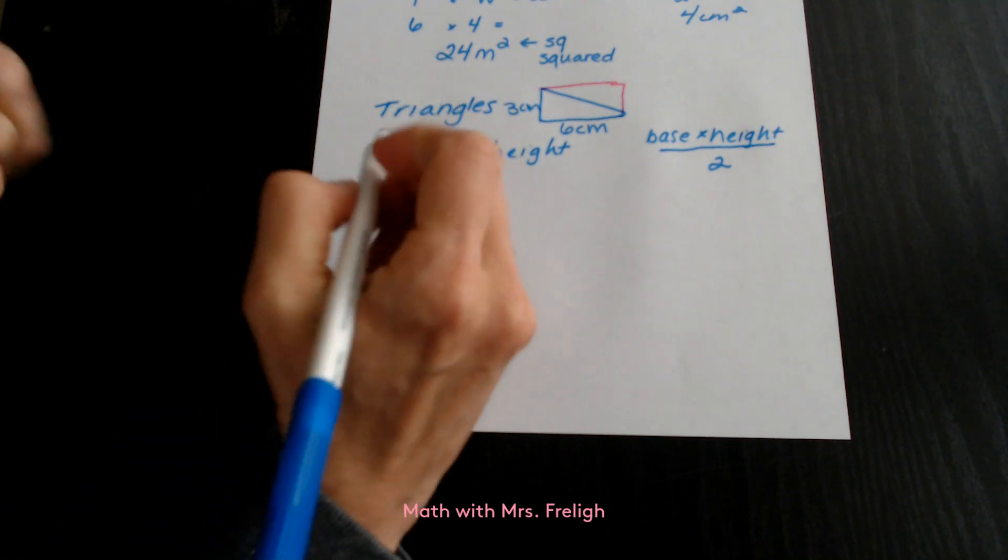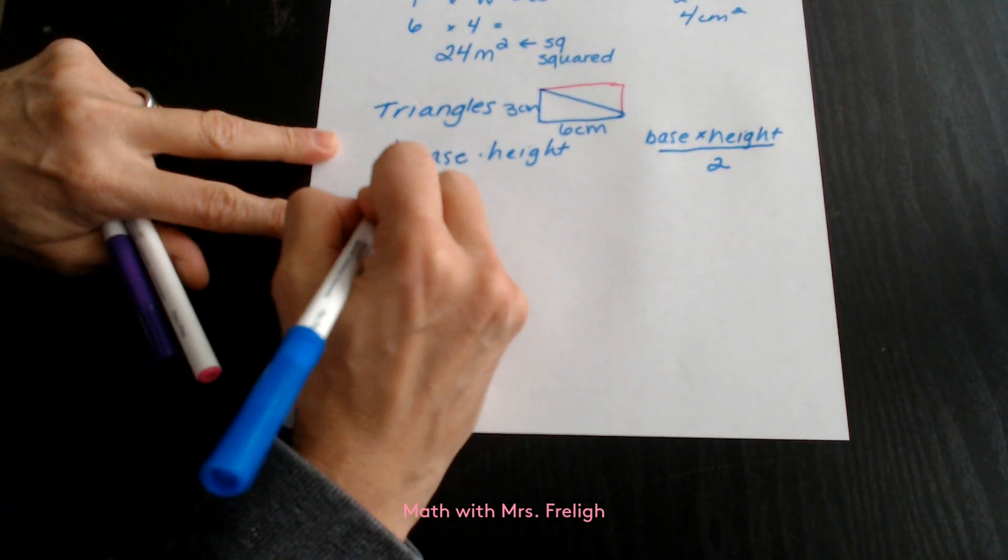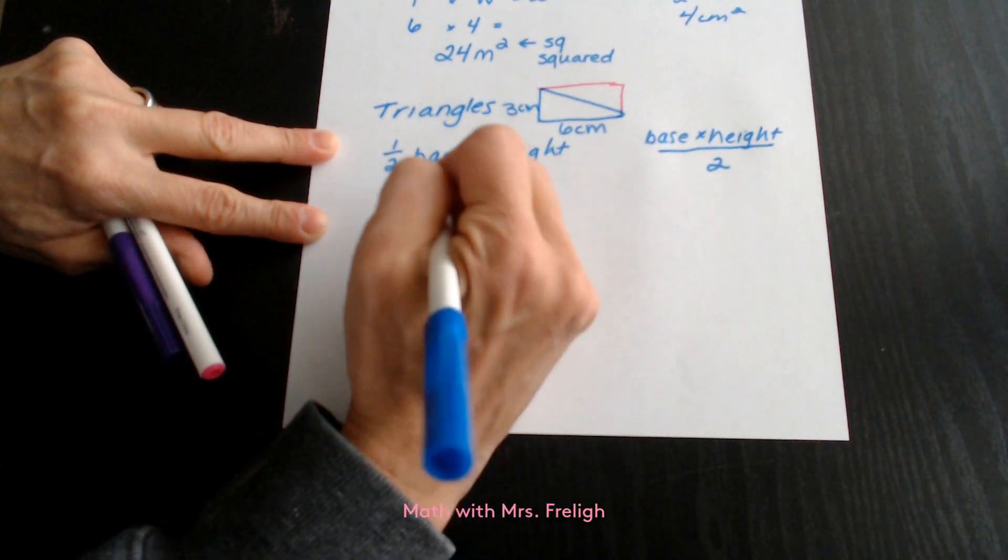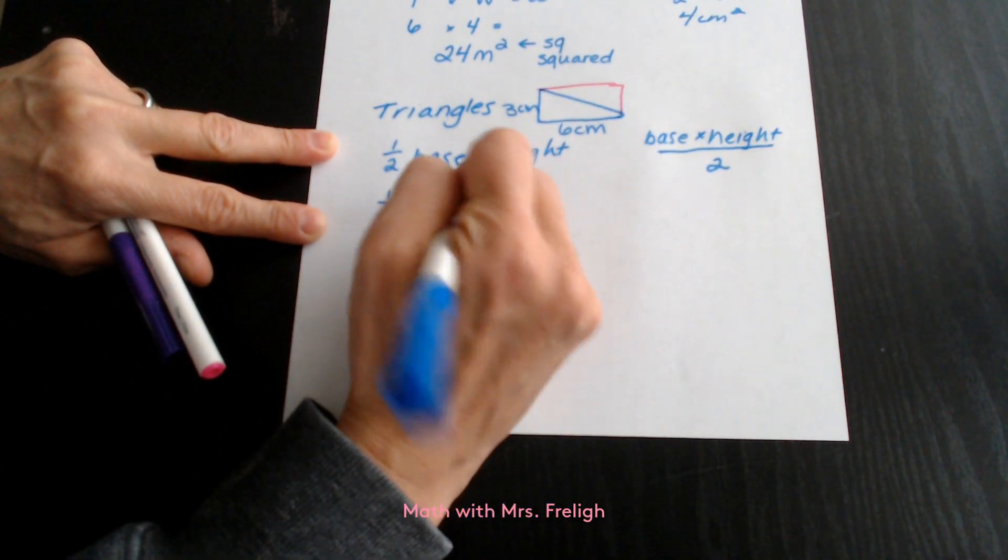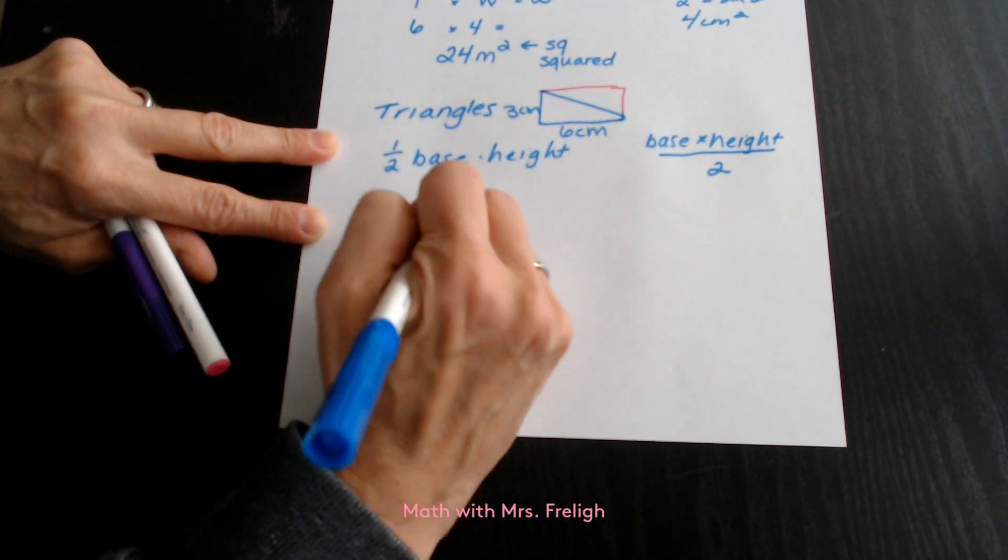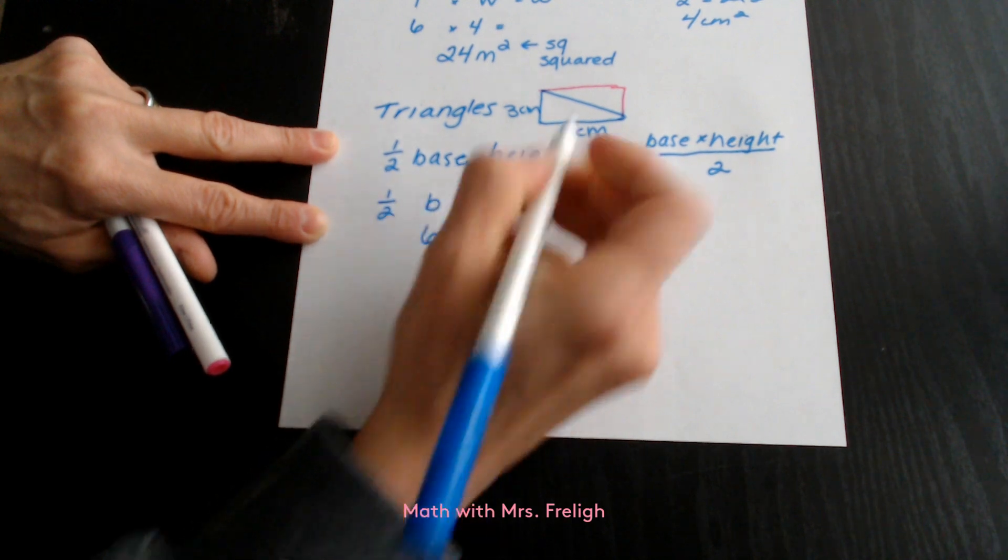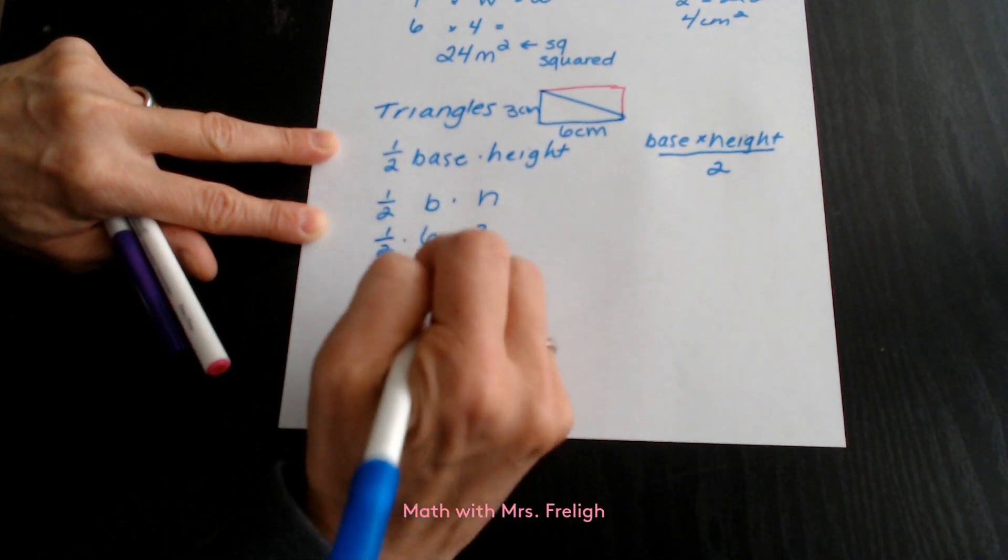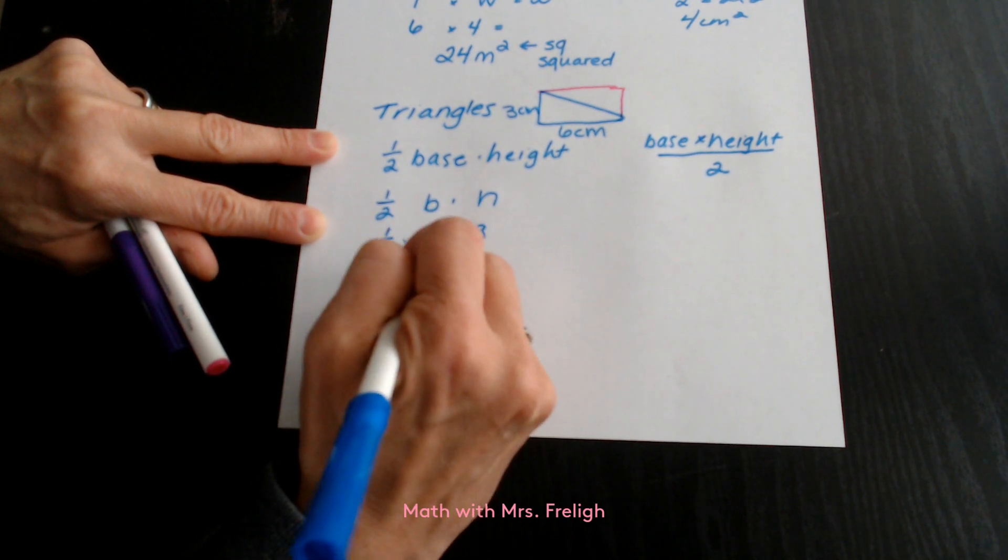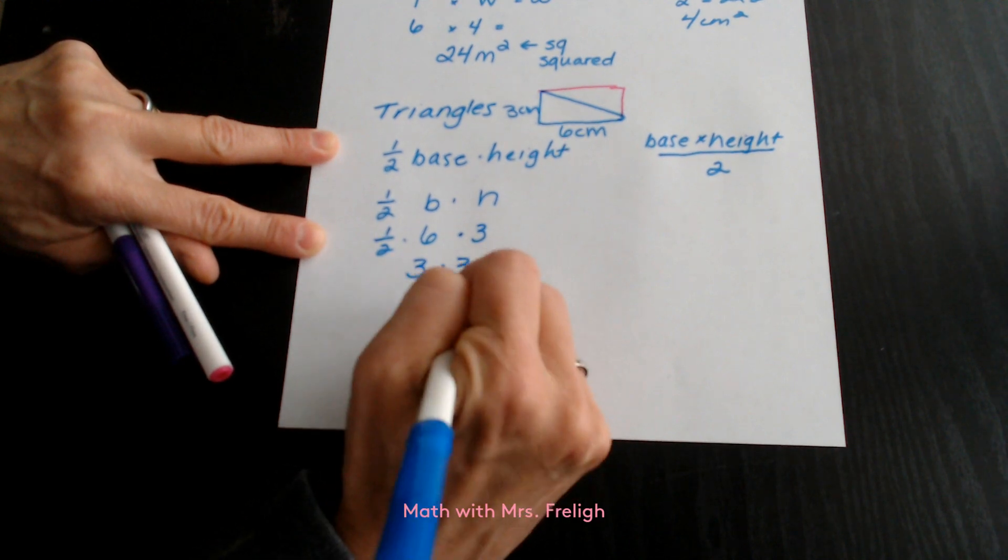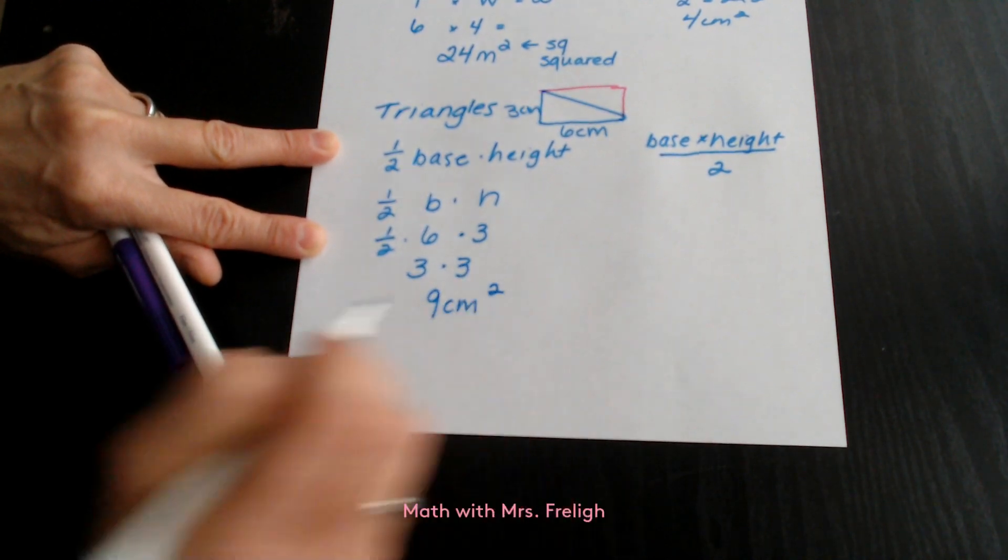So if we use this first formula, we have half. The base is the part that it sits on. We would abbreviate the base with a B and height with an H. So the base we just said was the one it sits on, so this would be 6. The height would be 3. So if we multiply half by 6, we would get 3 times 3, which would be 9 centimeters squared.